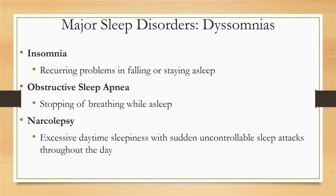These disruptions must also produce daytime sleepiness, fatigue, impaired social or occupational performance, or mood disturbances. Insomnia is the most common sleep complaint among adults. About one out of three people occasionally experience transient insomnia, which lasts from one or two nights to a couple of weeks. About one out of ten adults experience chronic insomnia, defined as at least three nights each week for a month or longer. The risk of insomnia is influenced by gender and age — women are twice as likely to suffer from insomnia as men. Although many causes can initially trigger insomnia, psychological and behavioral factors are almost always involved in perpetuating the problem.